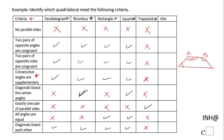Now the kite. The kite is a special quadrilateral. 'No parallel sides' — correct, a kite does not have parallel sides. 'Two pairs of opposite angles are congruent' — no. 'Two pairs of opposite sides are congruent' — no. 'Consecutive angles are supplementary' — no. 'Diagonals bisect the vertex angles' — only one of them does, so I'll mark that as no. 'Exactly one pair of parallel sides' — no. 'All angles are equal' — no. 'Diagonals bisect each other' — no.